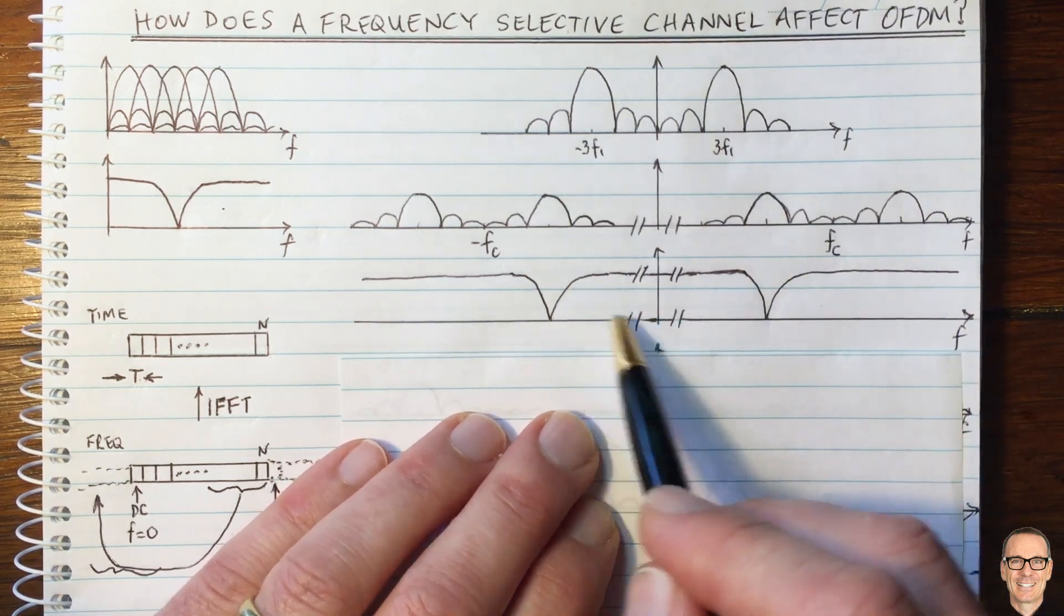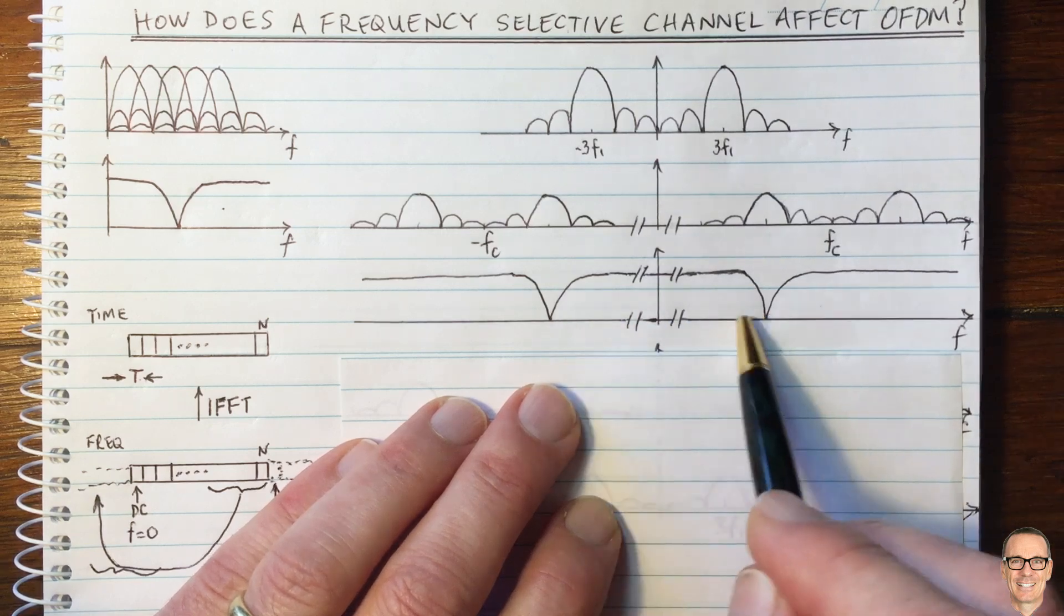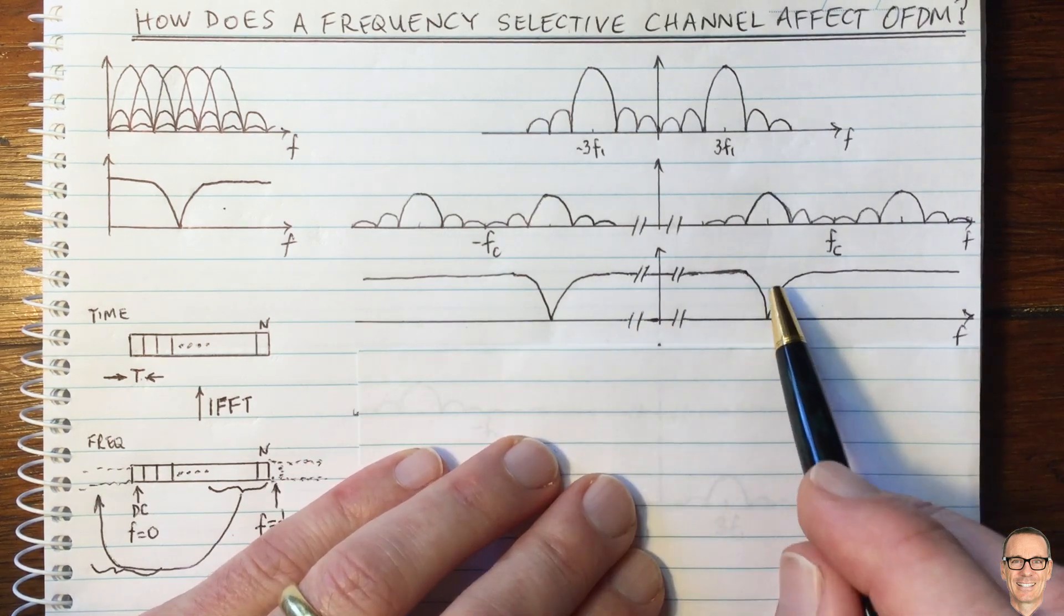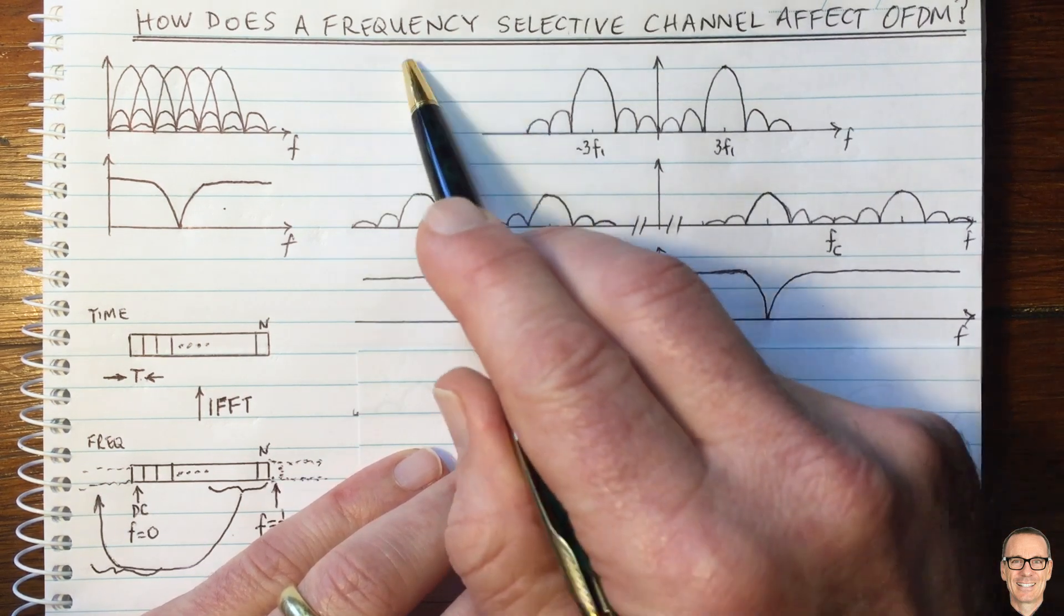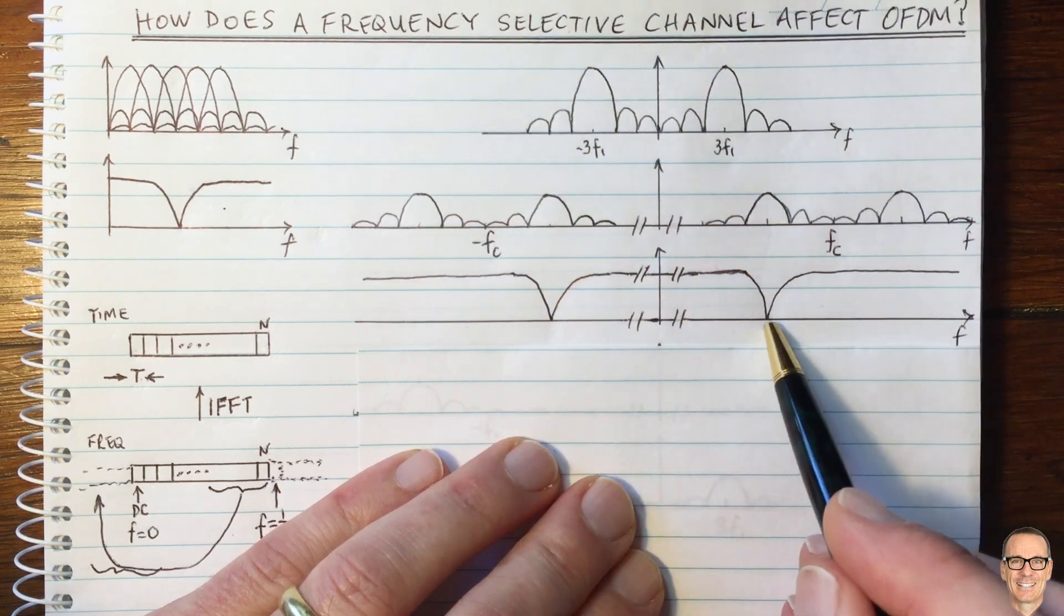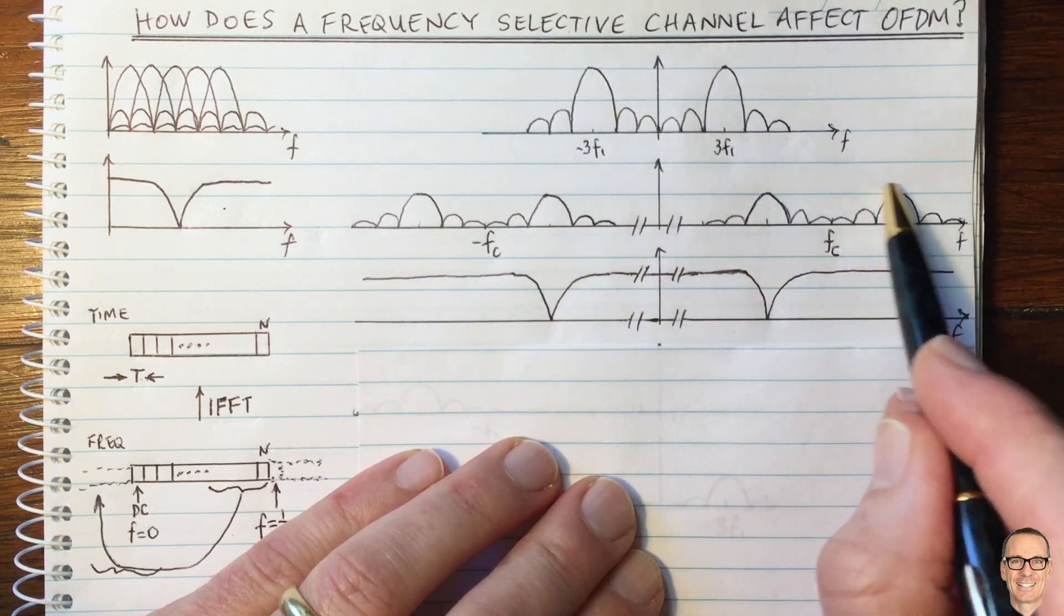Of course, it's mirrored on the negative side, equally distant from zero. So now it's clear to see that a notch from a frequency selective channel never knocks out an entire subcarrier.